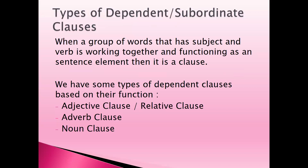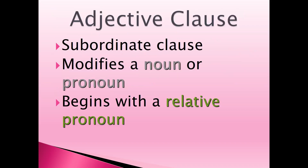Within a dependent clause, because it functions as a sentence fragment, it also functions as a sentence element. When a group of words with a subject and verb works together as one unit functioning as a sentence element, that is what we call a clause. The types of dependent clauses are: adjective clause (also called relative clause), adverb clause, and noun clause. An adjective clause modifies a noun or pronoun — a group of words whose function is to modify a noun or pronoun.